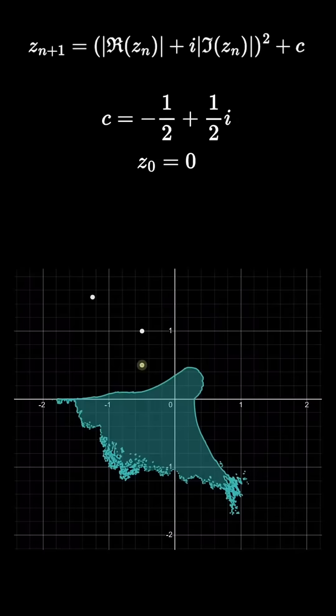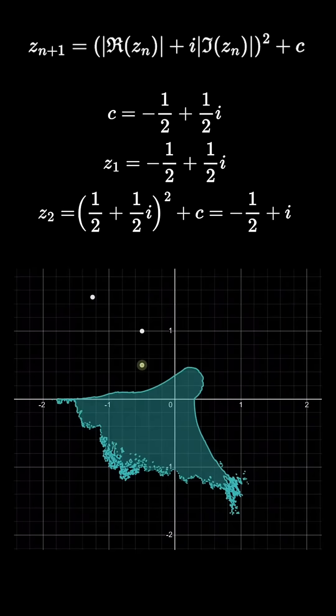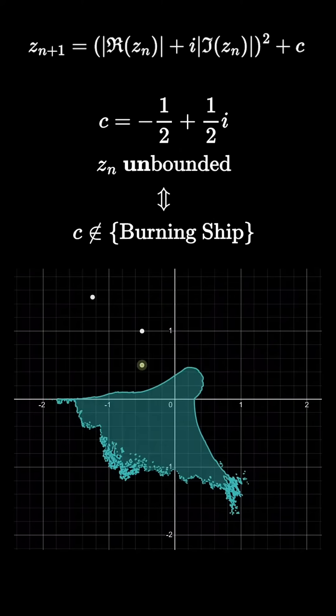For example, if c equals negative one-half plus one-half i, then the sequence goes 0, negative one-half plus one-half i, negative one-half plus i, negative five-fourths plus three-halves i, and so on. This particular number ends up going to infinity, so it isn't in the set.